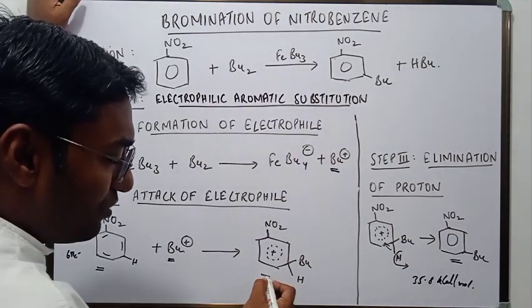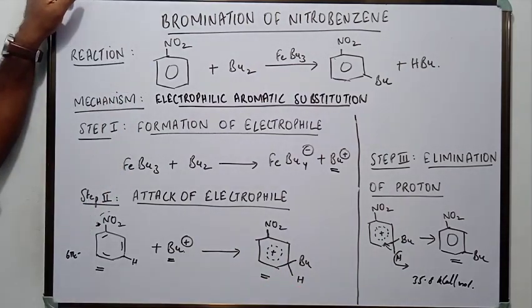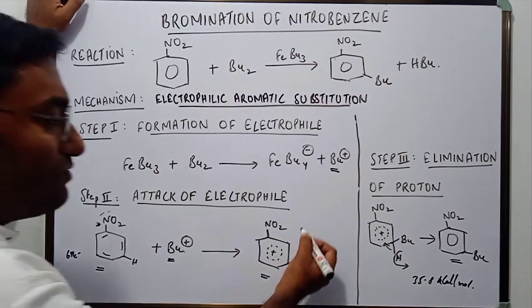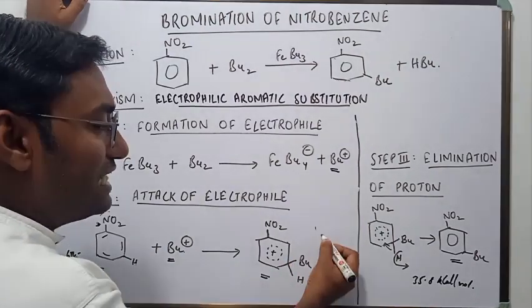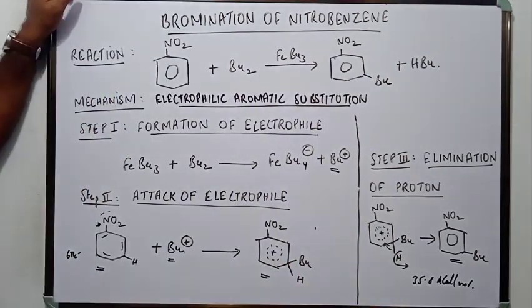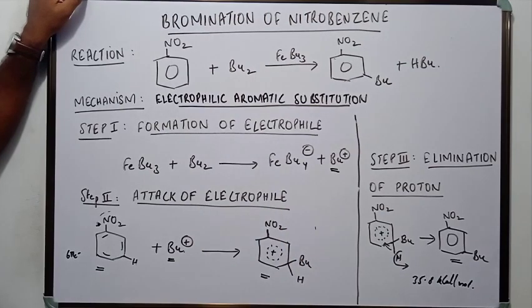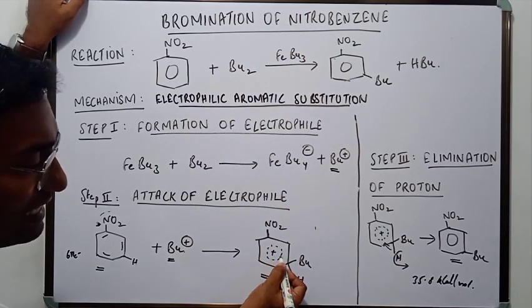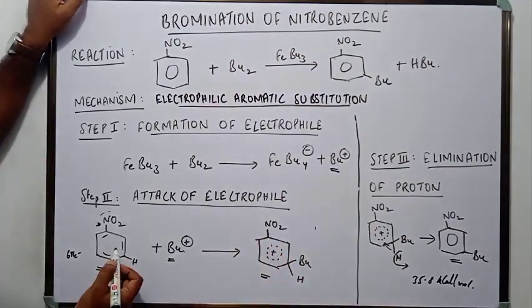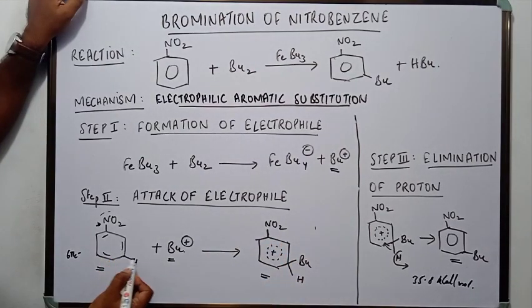And that would result in a formation of a carbocation. More specifically speaking it would lead to the formation of a Wheland intermediate. A Wheland intermediate is a positively charged benzene ring. And now we have seen that a Wheland intermediate is formed. It is because Br has taken this electron pair.